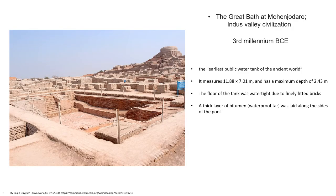Now we shall take a look at great baths used in ancient times for multiple purposes. The earliest great bath is the Great Bath of Mohenjo-daro, built during the 3rd century BC — long before Roman baths were built in Europe. This bath measured 11.88 meters in length, 7 meters in width, and 2.43 meters in depth. Its floor and side walls were water-tightened with finely fitted fire bricks and a thick layer of bitumen or waterproof tar. The bath had a series of rooms along the eastern edge, with one room having a well to supply water to the tank.